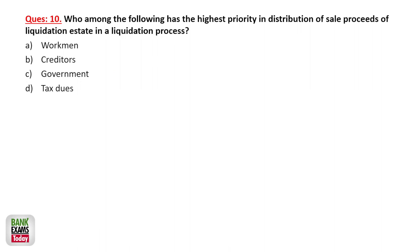Who among the following has the highest priority in distribution of sale proceeds of the liquidation estate in the liquidation process? Whenever a company goes through an insolvency process and assets are sold, the workmen or employees get the highest priority in the distribution of sale proceeds. So option A is the correct answer.